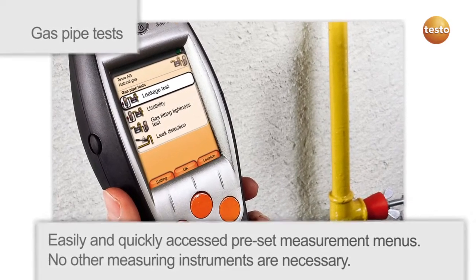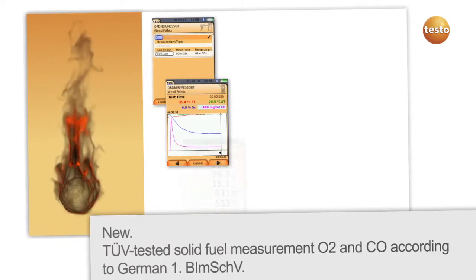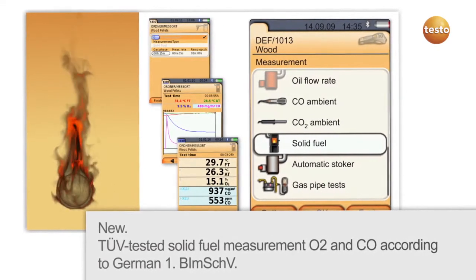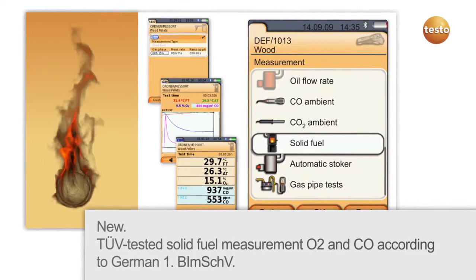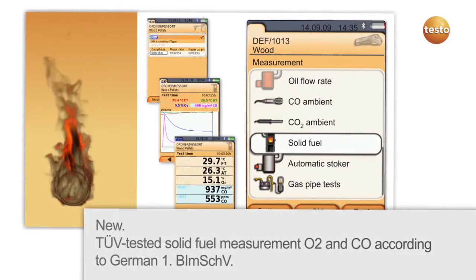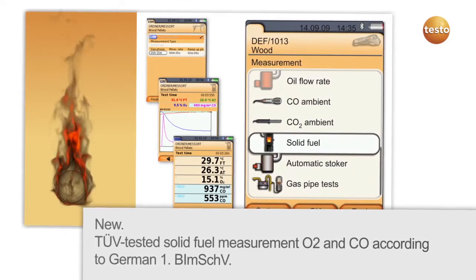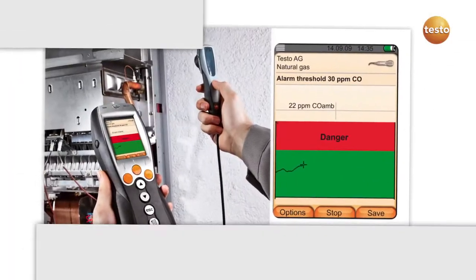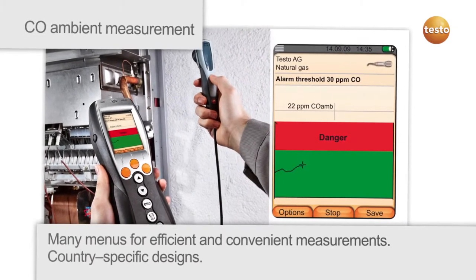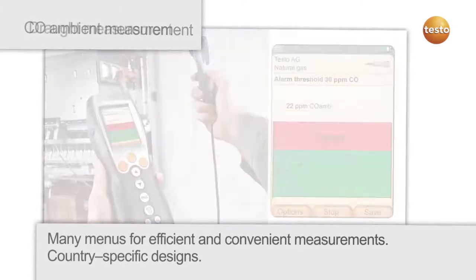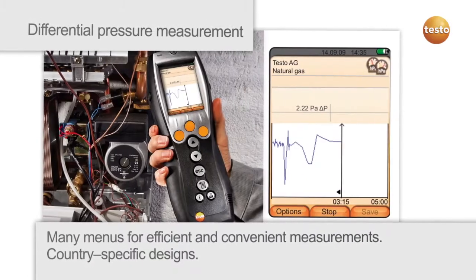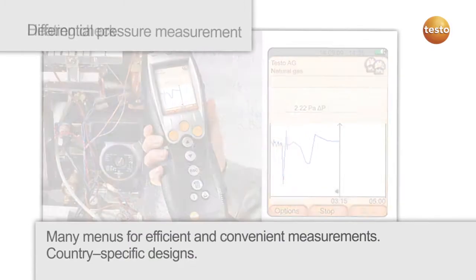A new function is the menu for solid fuel measurement. This allows you to carry out a solid fuel measurement for O2 and CO, which has been tested by the German technical supervision authority TUV. Many measurement menus, some with country-specific designs, support you for quick and easy measurement.